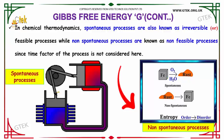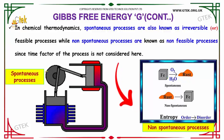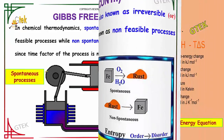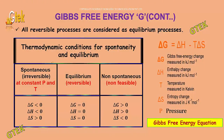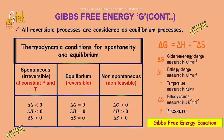Here, this process is reversible. All reversible processes are considered as equilibrium processes. The thermodynamic condition for spontaneity and equilibrium is given in this table. Spontaneous is irreversible; at constant pressure and temperature it is at equilibrium; and non-spontaneous is non-feasible.